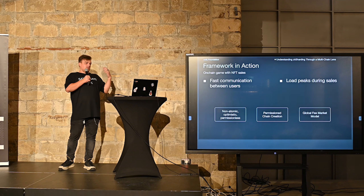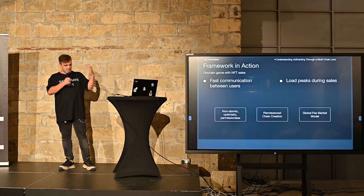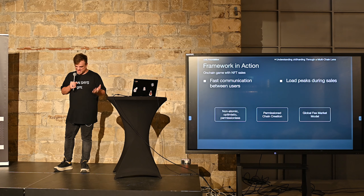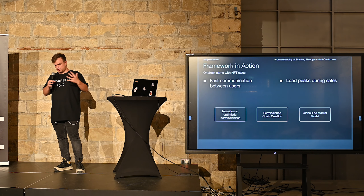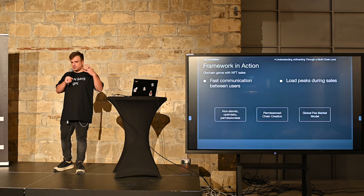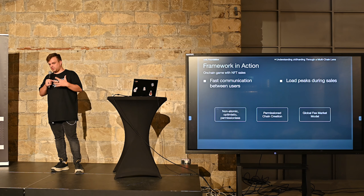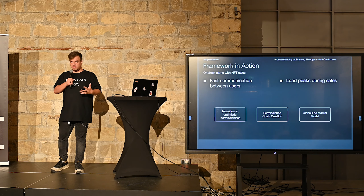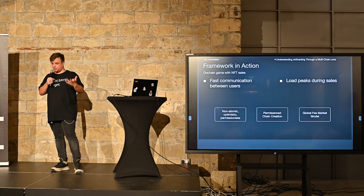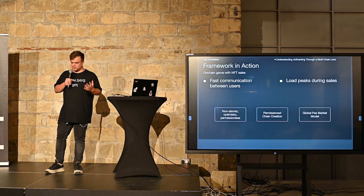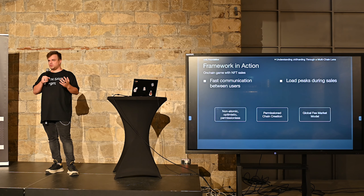A smaller but quite interesting subcategory here is address space — it can be non-intersected or full. Basically, can you have two identical addresses on two different chains? If you can't have them, it's full address space; if you can, it's non-intersected. You can see full address space in all rollup-based stacks, and non-intersected address spaces in classic sharded blockchain stacks, as well as in Ethereum sharding.